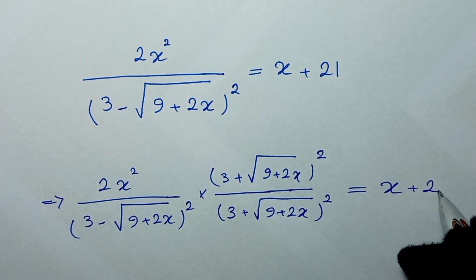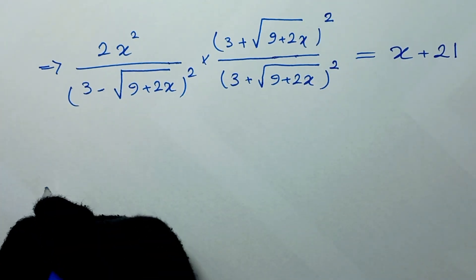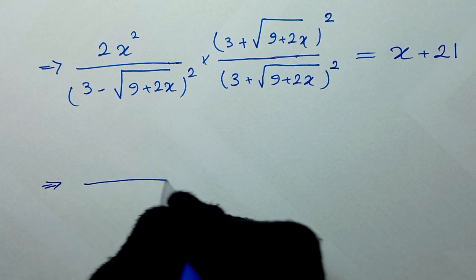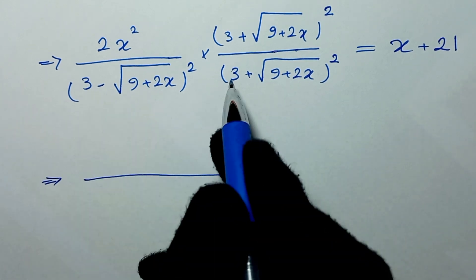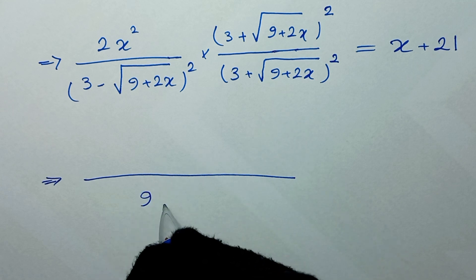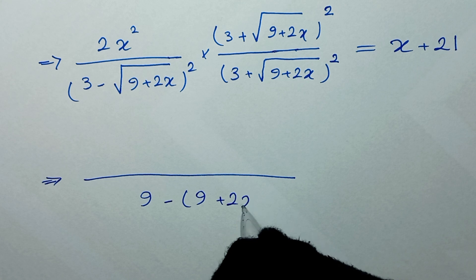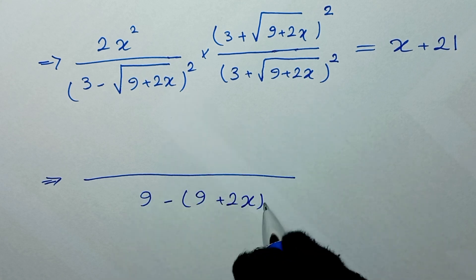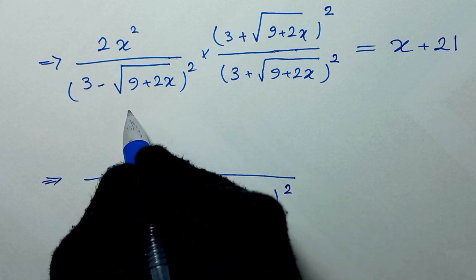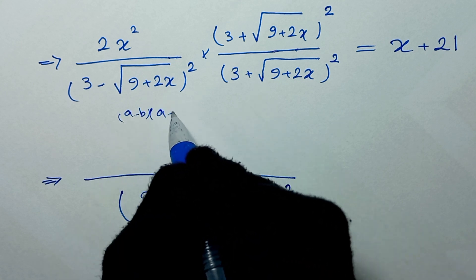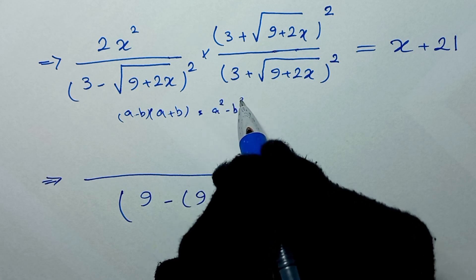For the denominator: 3 times 3 gives 9, minus square root of (9 plus 2x) squared gives (9 plus 2x). This is in the form (a minus b)(a plus b) which equals a² minus b², so the denominator simplifies to 9 minus (9 plus 2x).